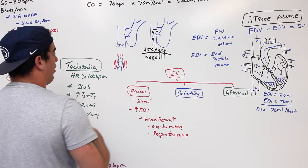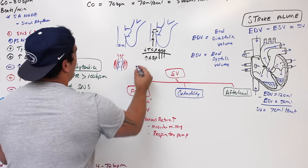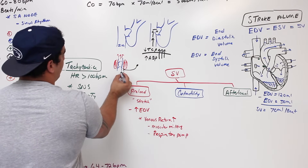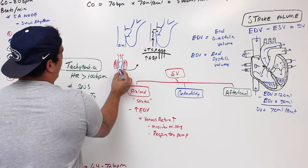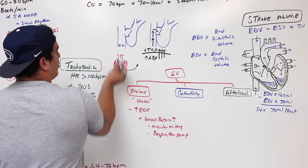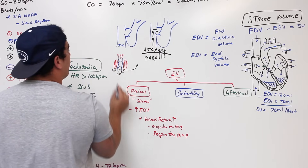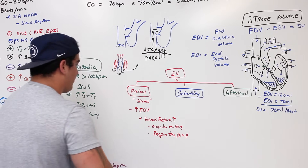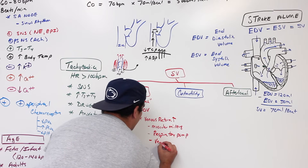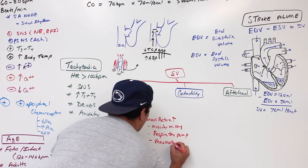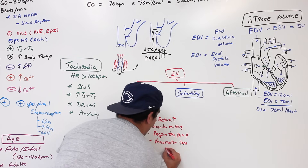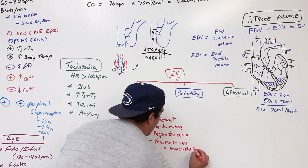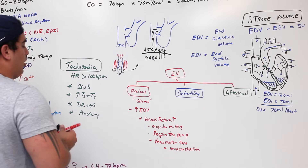A third mechanism is venomotor tone — the sympathetic nervous system acts on smooth muscle in the veins, releasing norepinephrine to cause venoconstriction, which squeezes blood upward and further increases venous return.